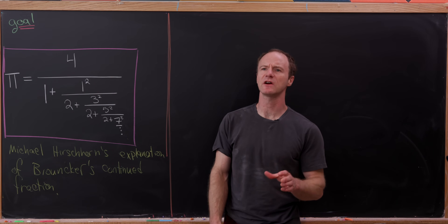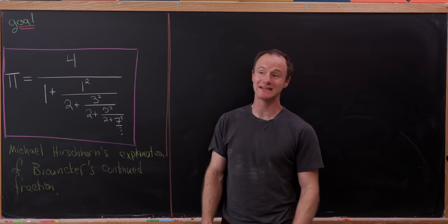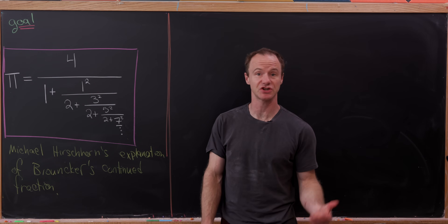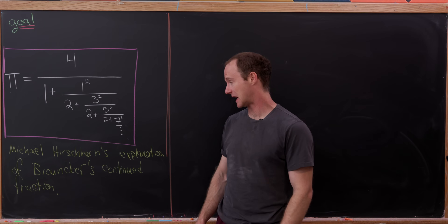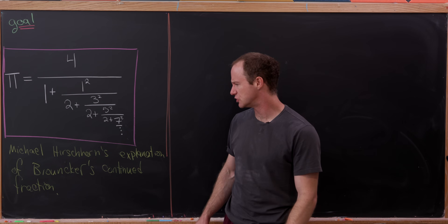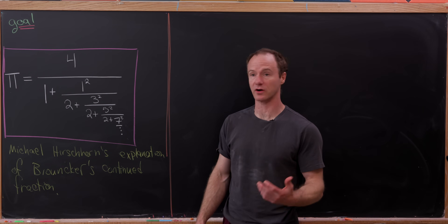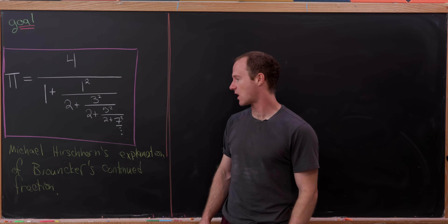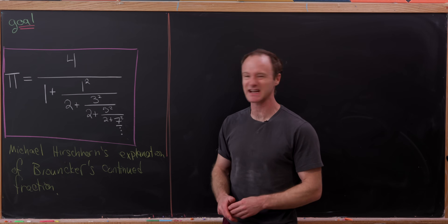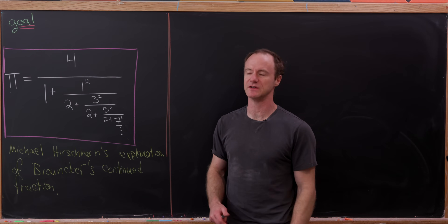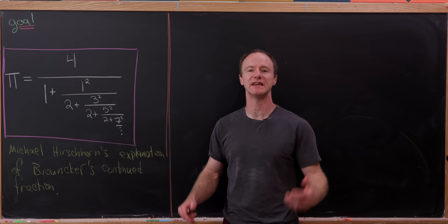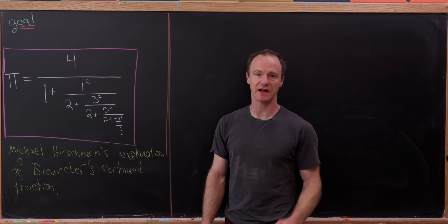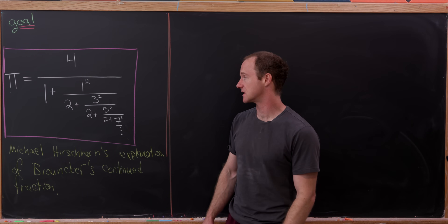Today's video is concerned with a very beautiful continued fraction representation of pi, due to Brouncker. I'm mostly following Michael Hirshhorn's explanation of this formula, and you can find it on his website.